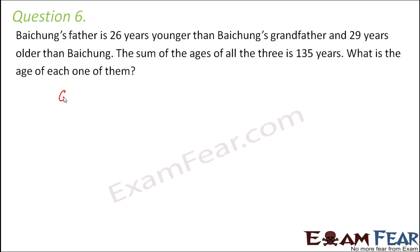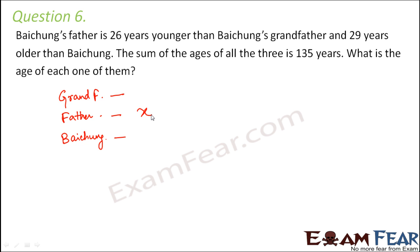The three people are: the grandfather, the father, and Bijuse himself. The first statement says Bijuse's father is 26 years younger than his grandfather, meaning the grandfather is older than the father. Similarly, the father is older than Bijuse. Let us assume the father's age is x, since one person is older than him and one is younger. So the grandfather's age would be x plus 26, and Bijuse's age would be x minus 29.